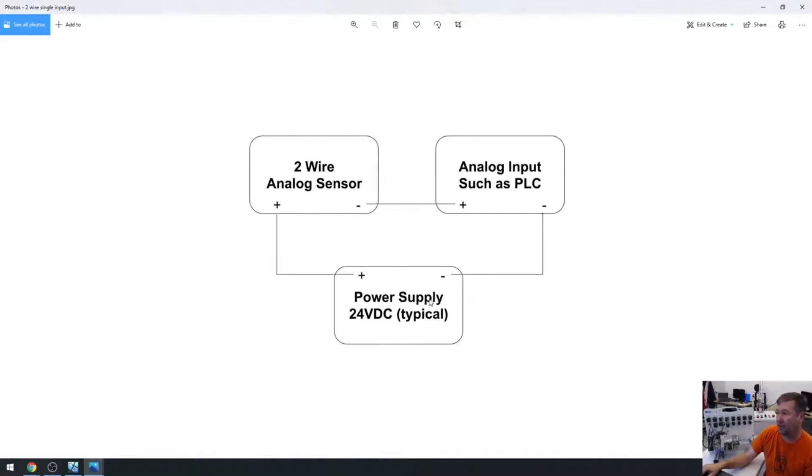And we're going to send 24 volt from our power supply plus to the plus of the sensor. And here's where it gets confusing to people is we're going to take the minus of that sensor and go to the plus or analog input. And then we're going to take the minus or the common and go back to our power supply.